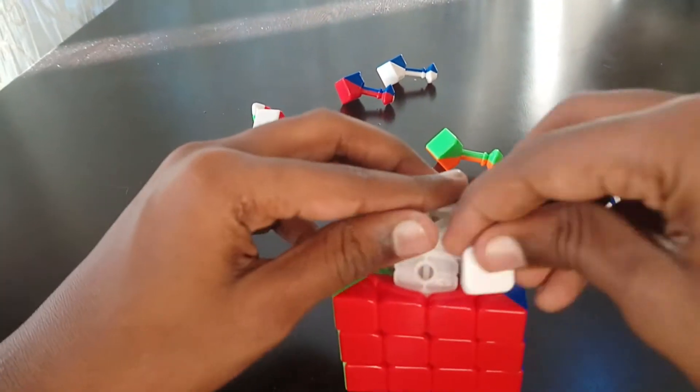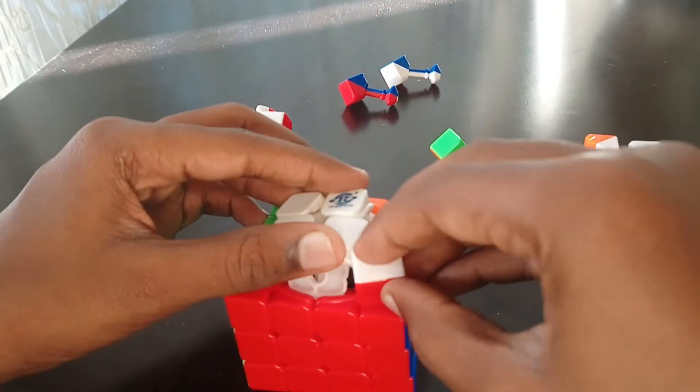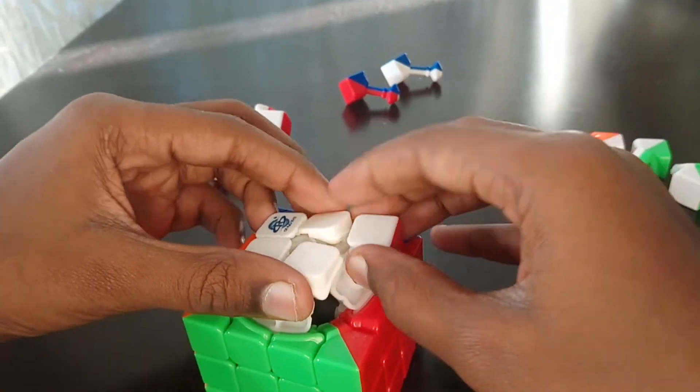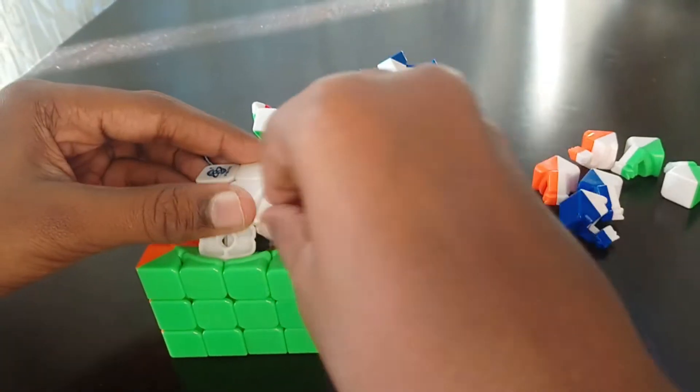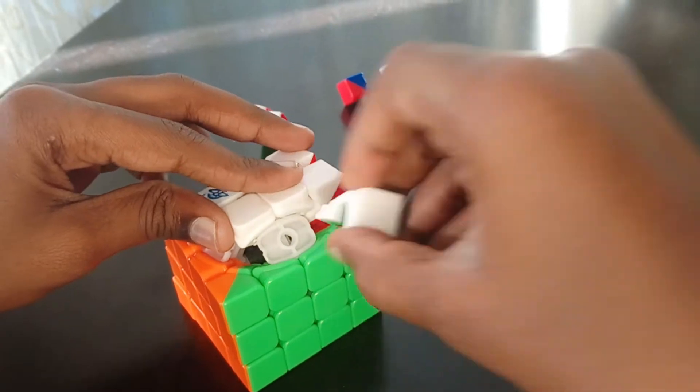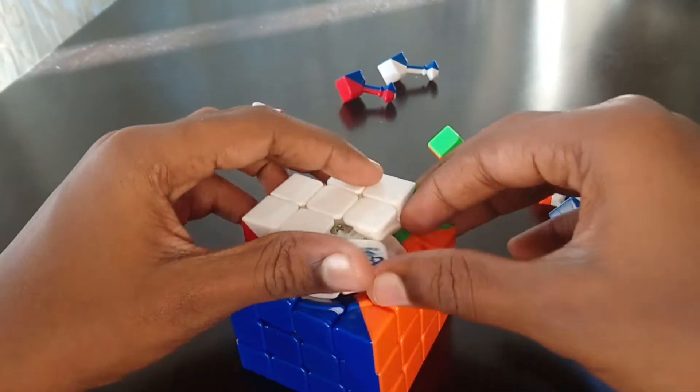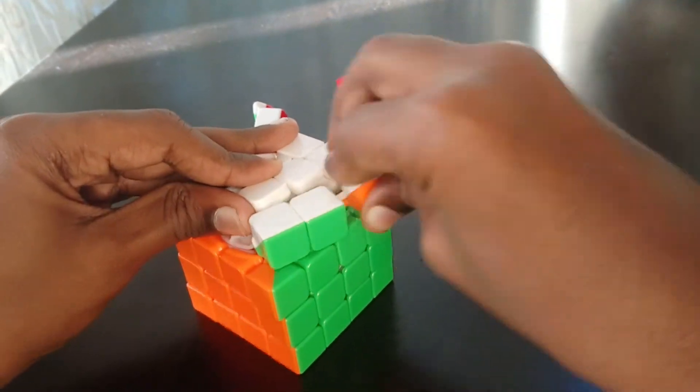So after doing that, you can fix the middle piece, but that's not a main piece. After doing that, you are almost finished. You can fix all these in the cube and you're finished.